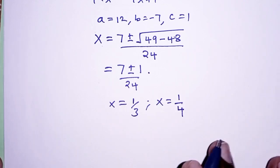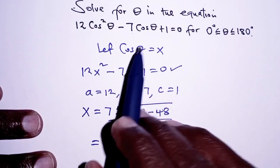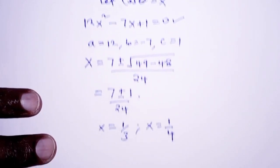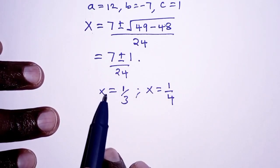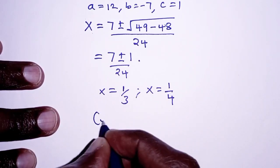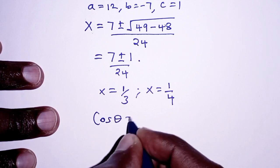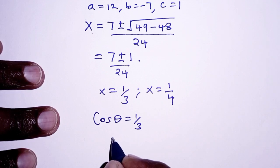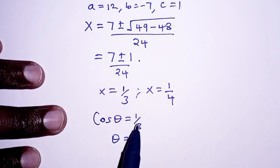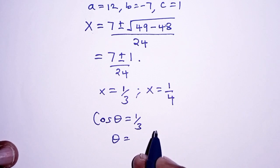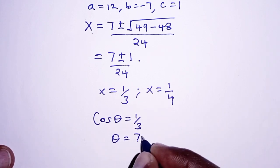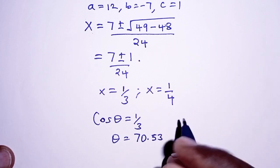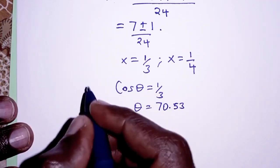With the values of x, we can go back to the substitution where we let cosine of theta equal x. For the first case, cosine of theta equals x, and x is one third. Therefore the value of theta is obtained by finding the cosine inverse of one third, and that gives us 70.53 degrees.